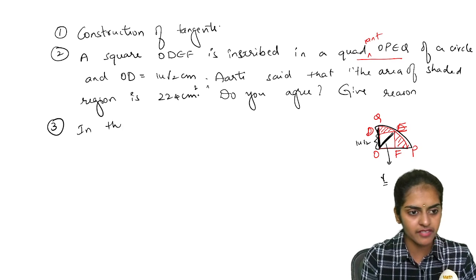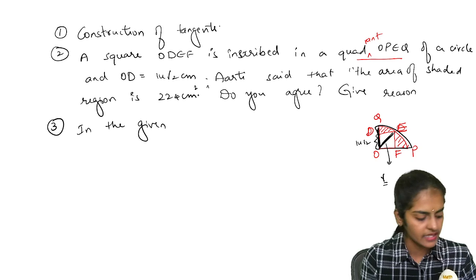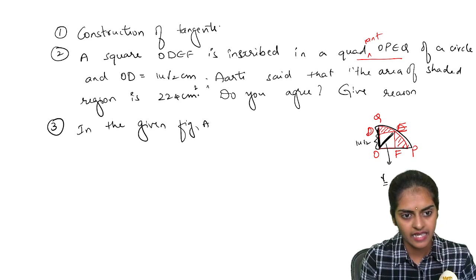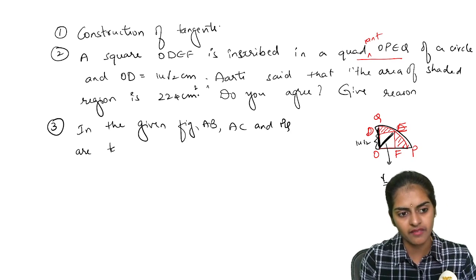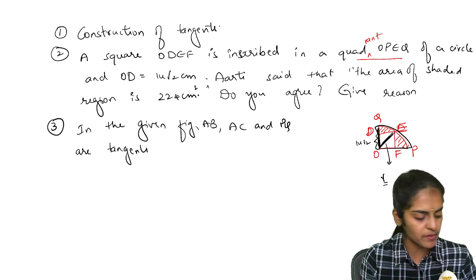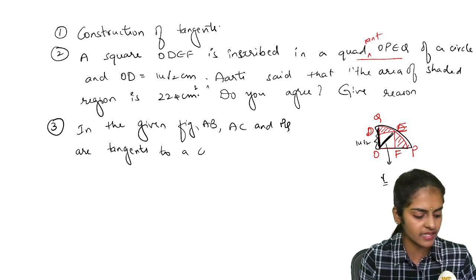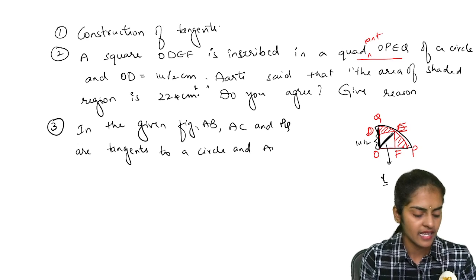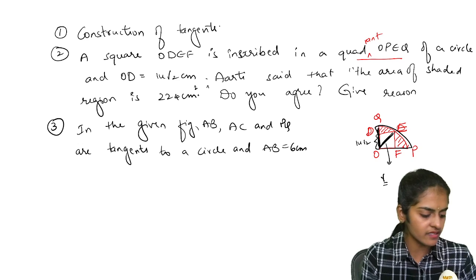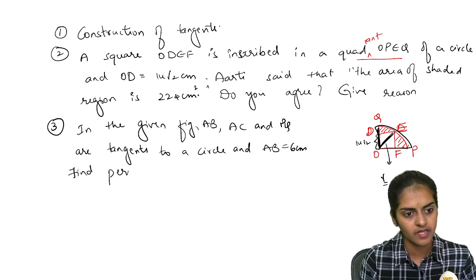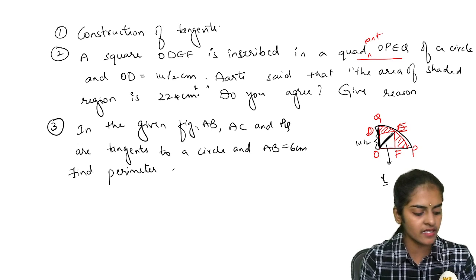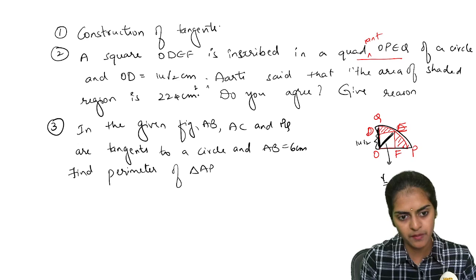they may ask you in the given figure, AB, AC and PQ are tangents to a circle and AB is 6 centimeters. So find perimeter of triangle APQ.